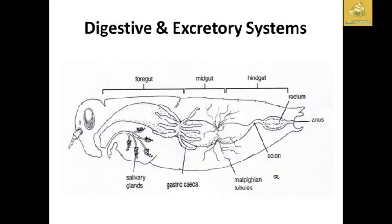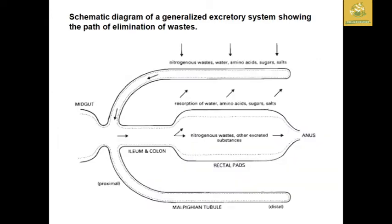Excretion and osmoregulation are referred to as the excretory system, performed largely by the Malpighian tubules and the hindgut. I have shown pictures of the digestive and excretory system where you can see the foregut, midgut, and hindgut, containing salivary glands, gastric caeca, Malpighian tubules, colon, rectum, and anus. In the picture of the Malpighian tubule, you can see that the tubules are connected to the midgut where nitrogenous waste, water, and amino acids are absorbed. Reabsorption of water, amino acids, sugars, and salts occurs in the Malpighian tubules, and only nitrogenous waste and other excretory substances are removed from the anus.